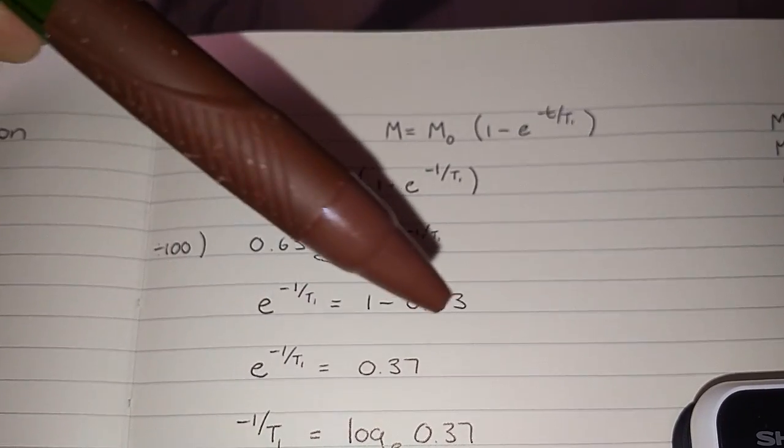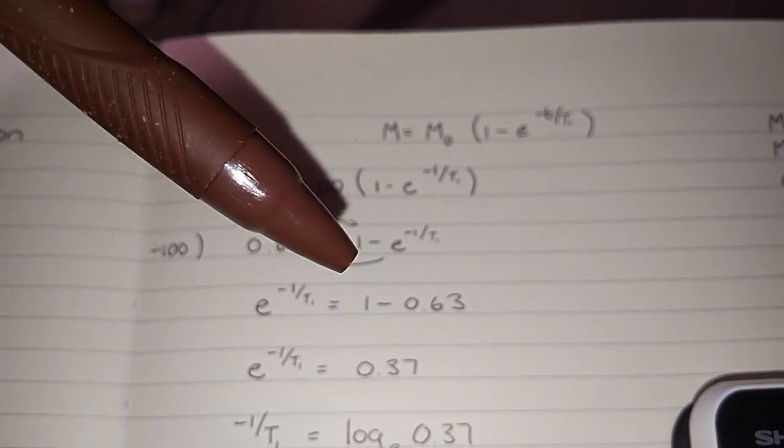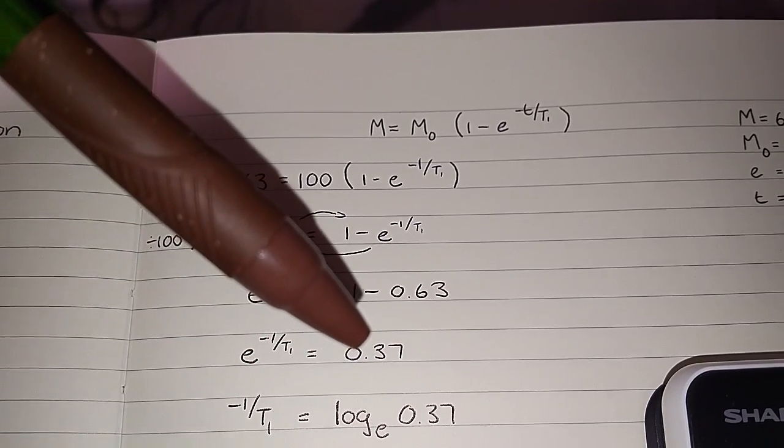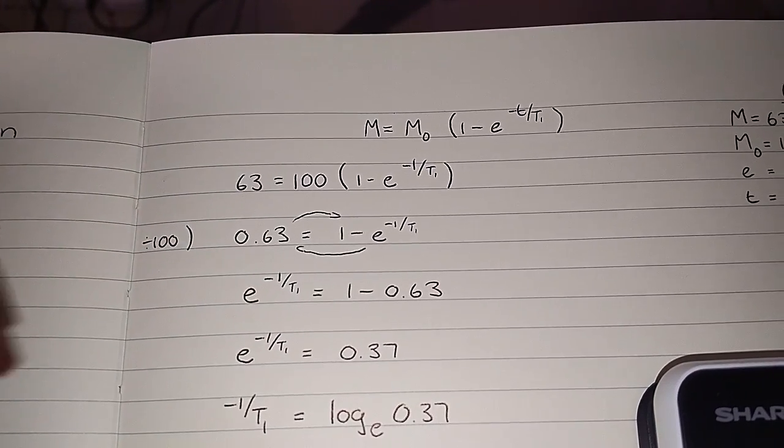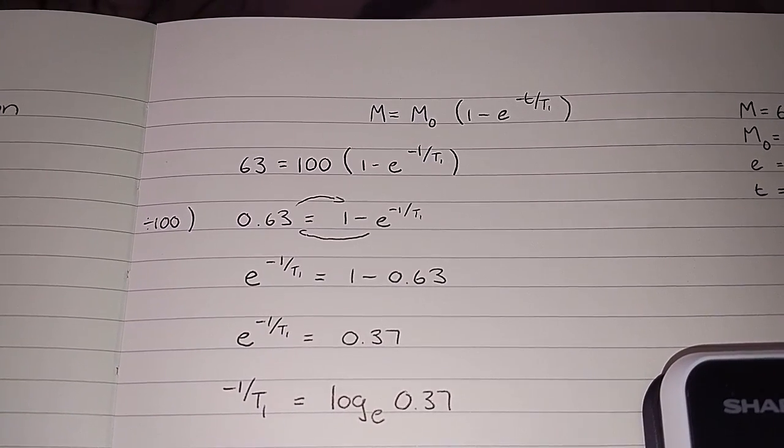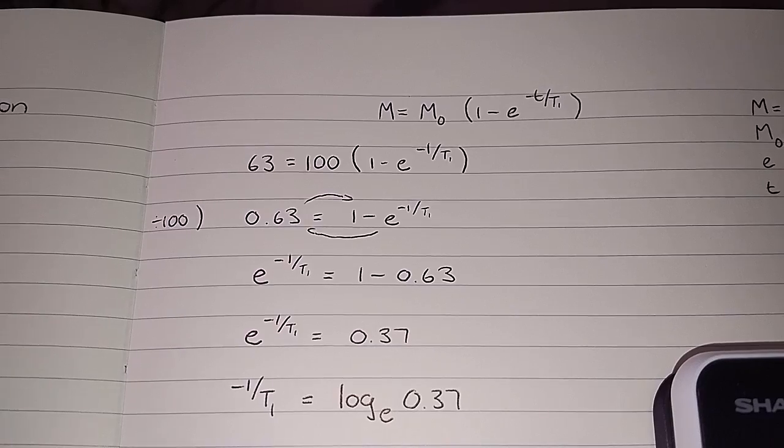And if you just simply subtract the 0.63 from the 1, that will then give you an answer of the 0.37 over here. Next step would be to use a logarithm in order to get that e down onto a base value so that we can use the exponents of the e on their own.